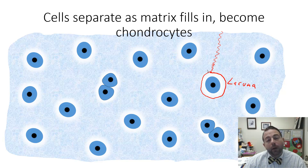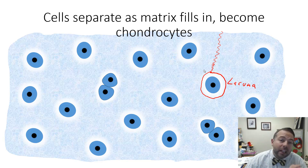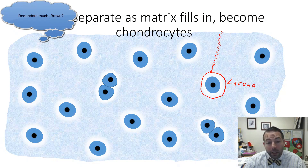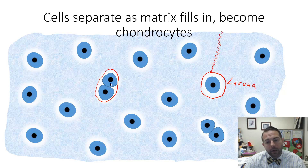These chondrocytes are not hibernating or dormant — they're still alive, still active, it's just that their activity is a little bit slower. But eventually this cell will undergo division, and you get two daughter cells formed from mitosis in the parent chondrocyte that initially started out in that spot.